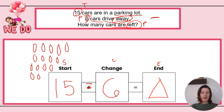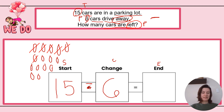Assuming you are ready to go: how many cars are left? 15 minus 6. So let's go ahead and scratch out six — 1, 2, 3, 4, 5, 6 cars drove away. How many are left? Let's count: 1, 2, 3, 4, 5, 6, 7, 8, 9. So what is my end? Nine. 15 minus 6 equals 9. Nine what? Nine cars. How many cars are left? Nine cars are left.